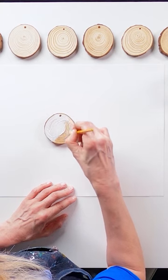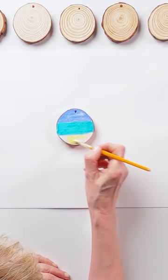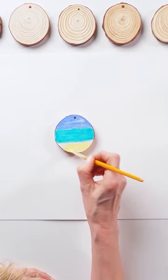Prime your wood slice to keep your colors bright. Use the flat wash brush to paint your background in three parts: blue, turquoise, and yellow to start with your beach scene.